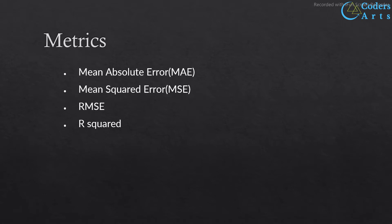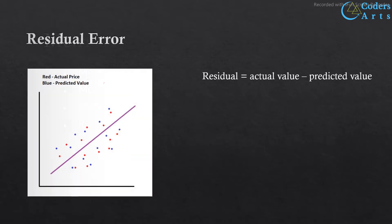We are going to cover these metrics: mean absolute error, mean squared error, root mean squared error, and R-squared. First we need to understand what is residual error. Residual error is the difference between the actual value and predicted value. In the graph the straight line is the best fit line, the red dots are actual values and the blue dots indicate predicted values. This residual error is used to calculate all these metrics.